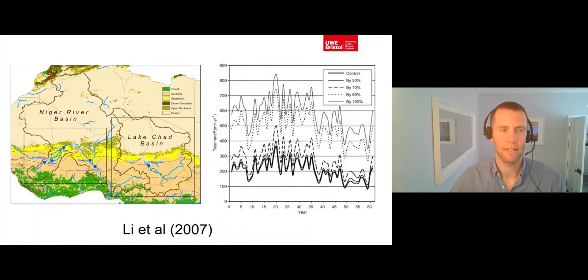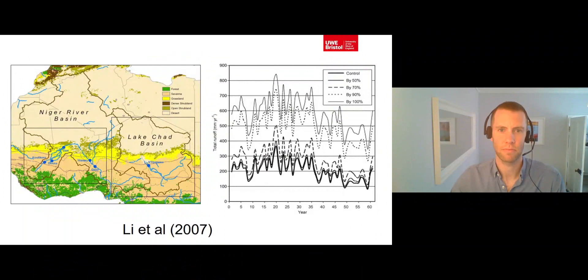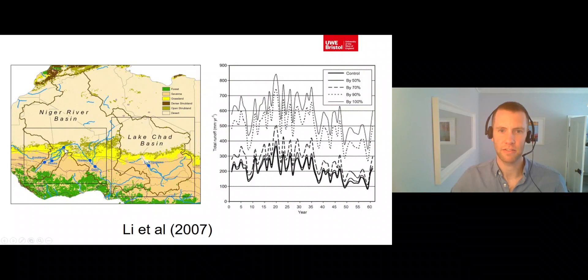Research by Li et al in 2007 showed that deforestation within the Niger and Lake Chad basins in West Africa would result in a 160% increase in runoff from hill slopes. We can see in this graph on the right that the level of runoff under the control conditions with no deforestation is much lower than the level of runoff under conditions where 100% of current vegetation is removed. This is despite the fact that less than 5% of the drainage basins are currently forested, as shown in the map on the left.